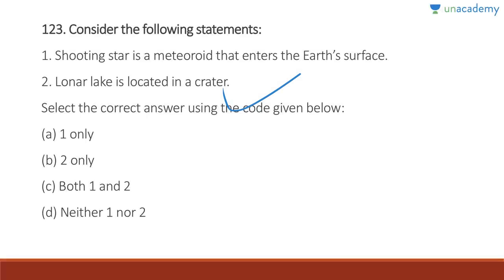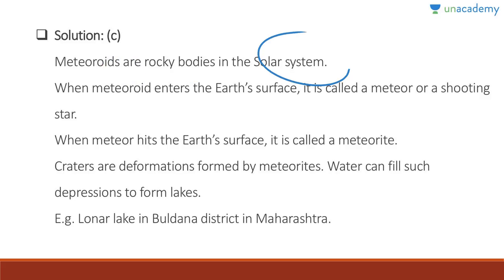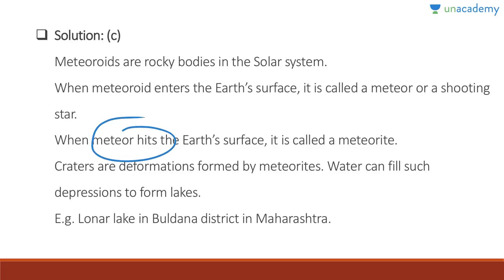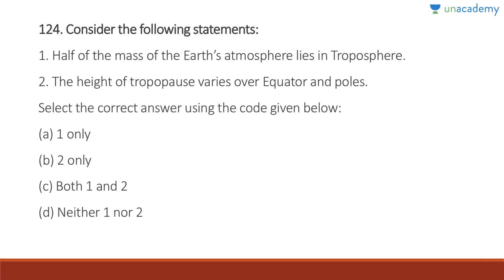Question 123: A shooting star is a meteorite that enters the Earth's surface — correct. Lonar Lake is located in a crater — correct. Answer is C, both one and two. Meteoroids are rocky bodies in the solar system. When a meteoroid enters Earth's atmosphere it is called a meteor or shooting star, and when it hits the Earth's surface it is called a meteorite. Craters formed by meteorites can fill with water to form lakes — for example, Lonar Lake in Buldana district, Maharashtra.